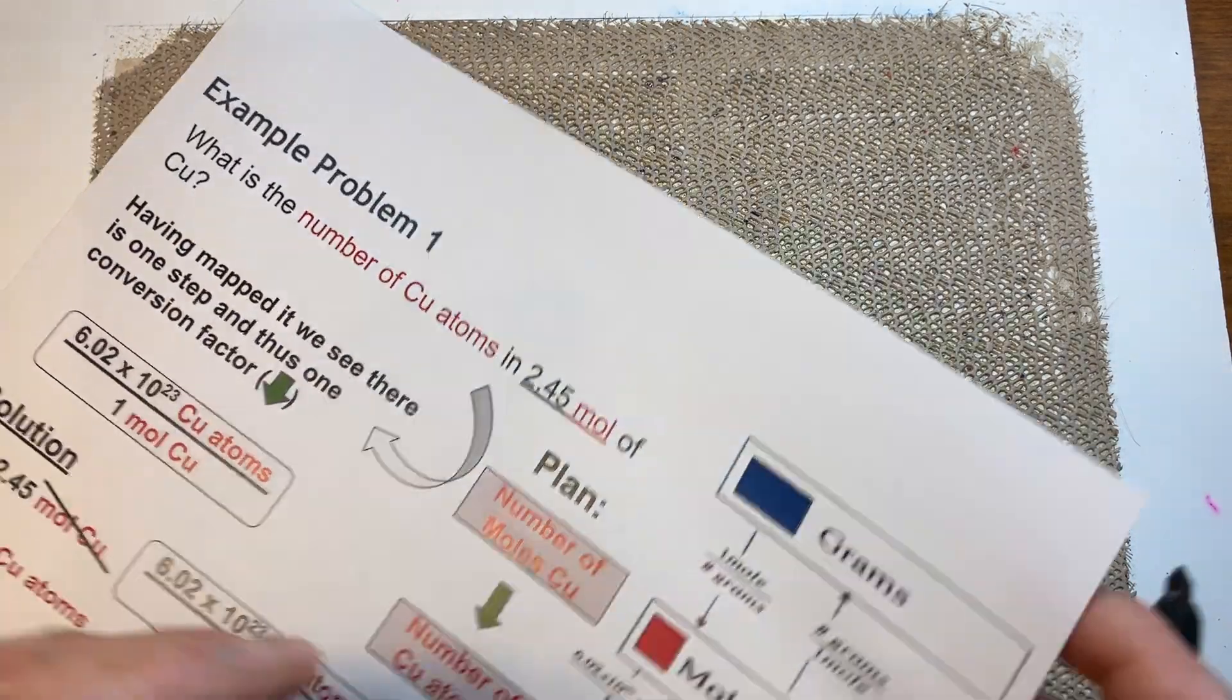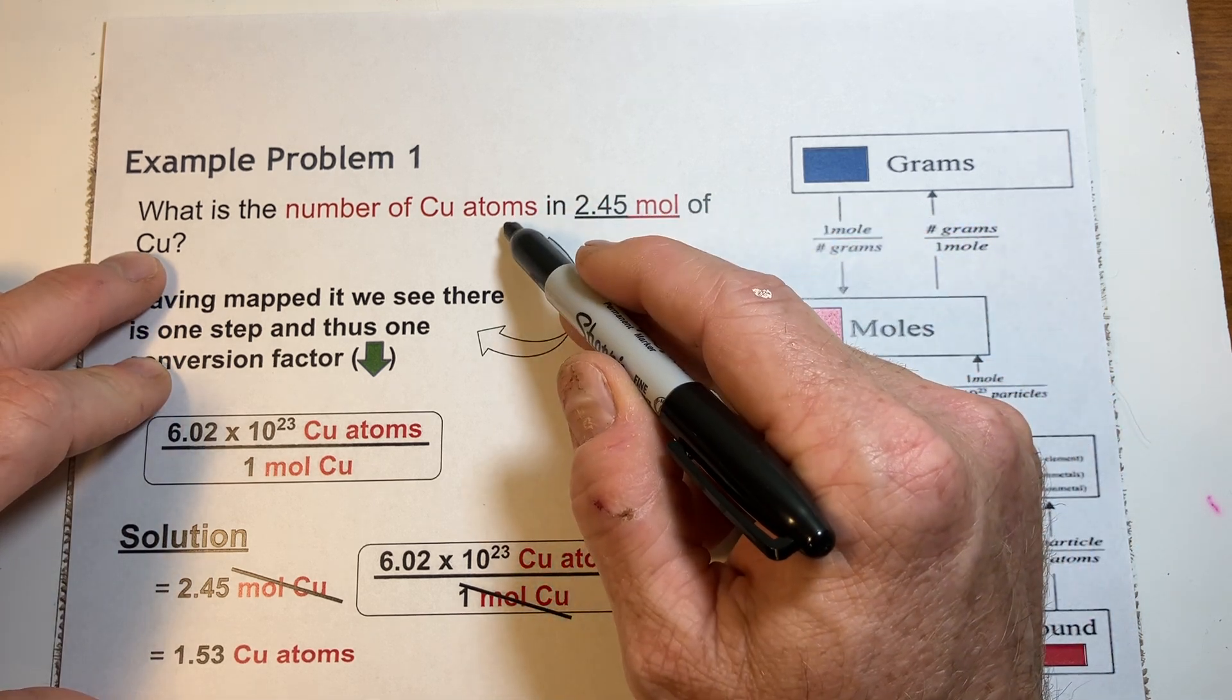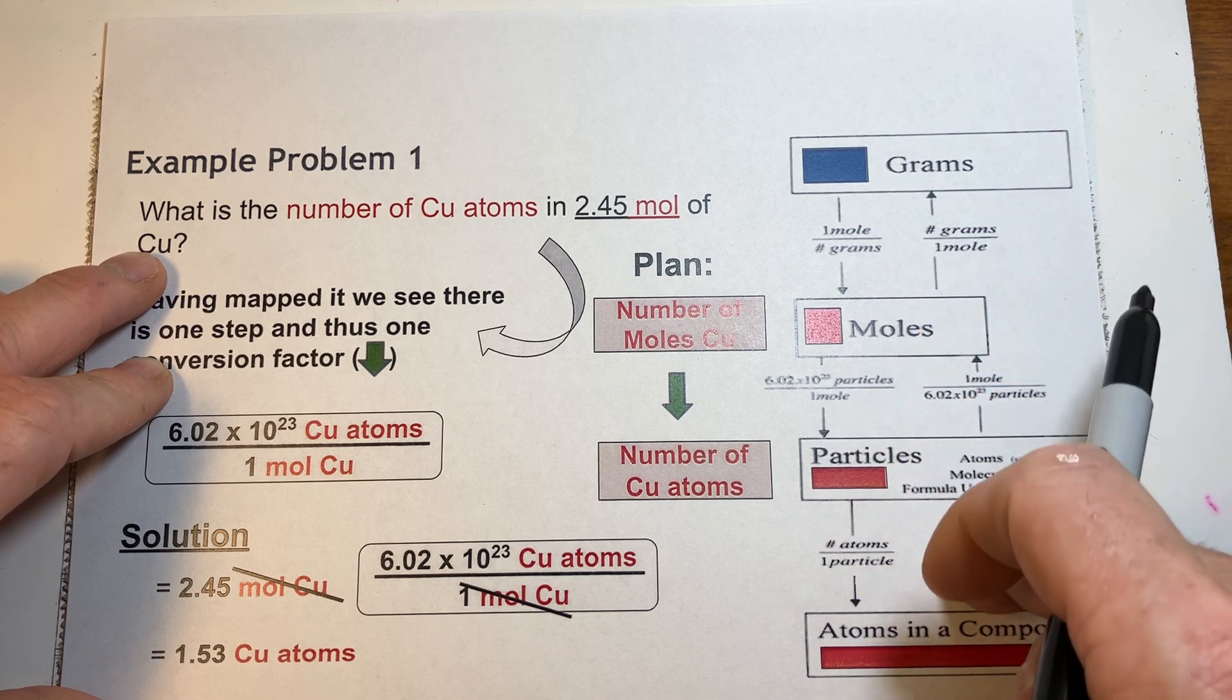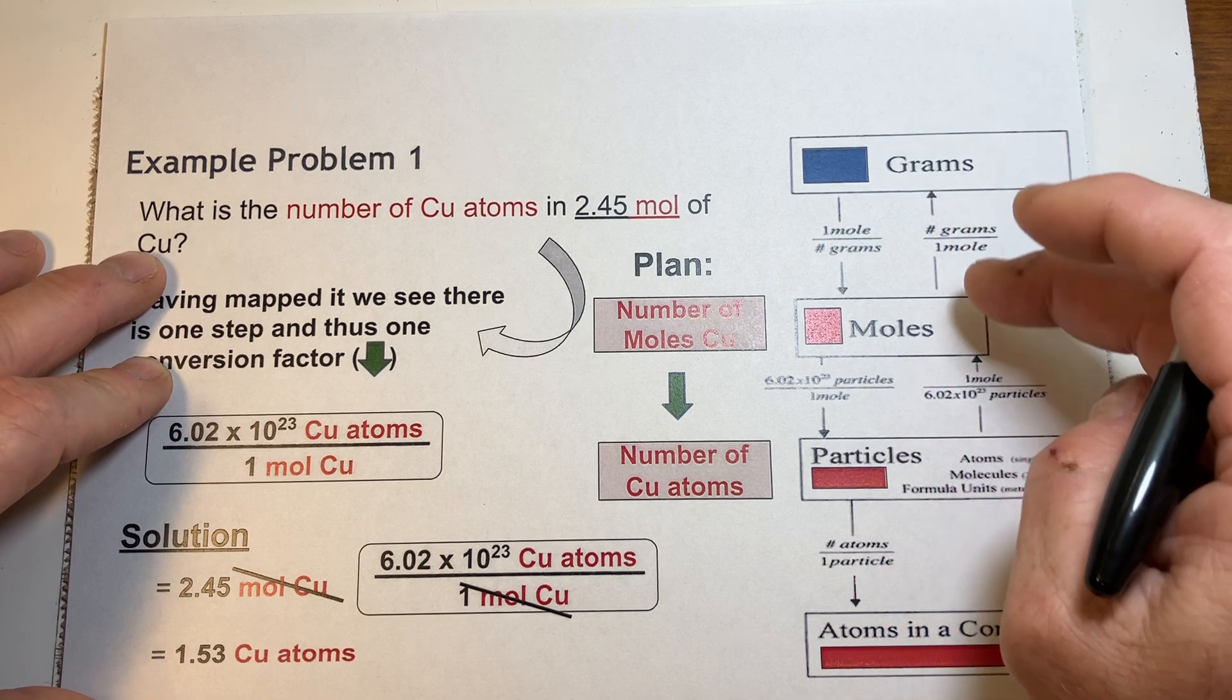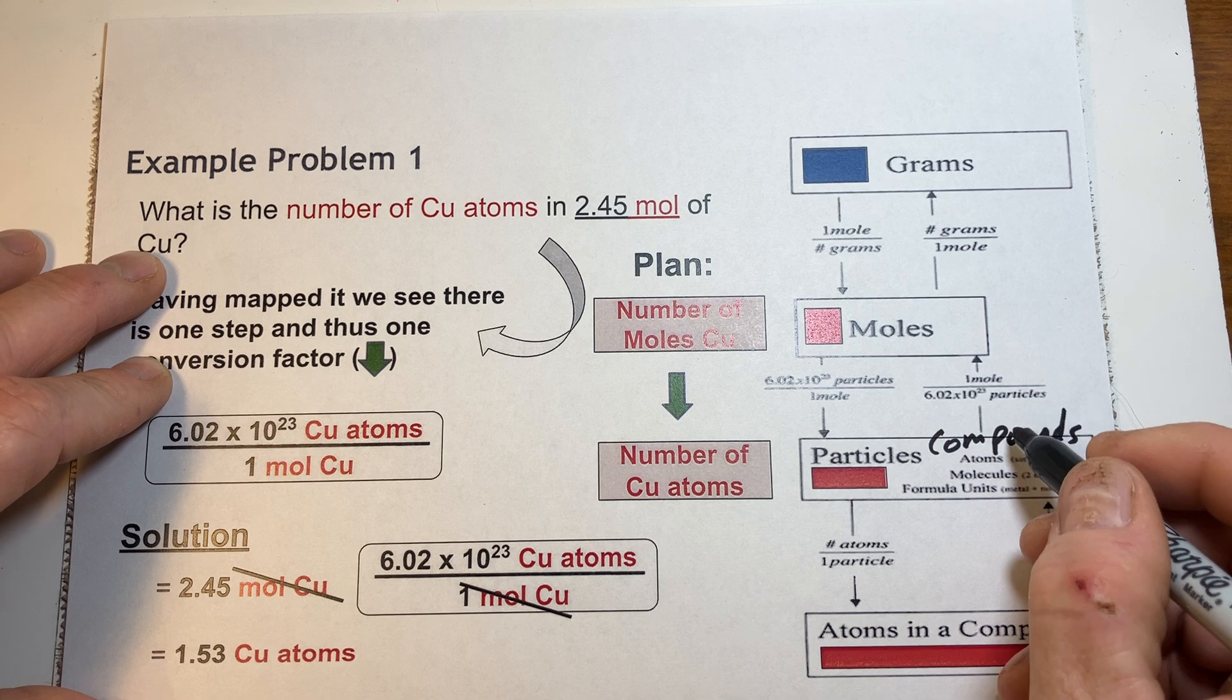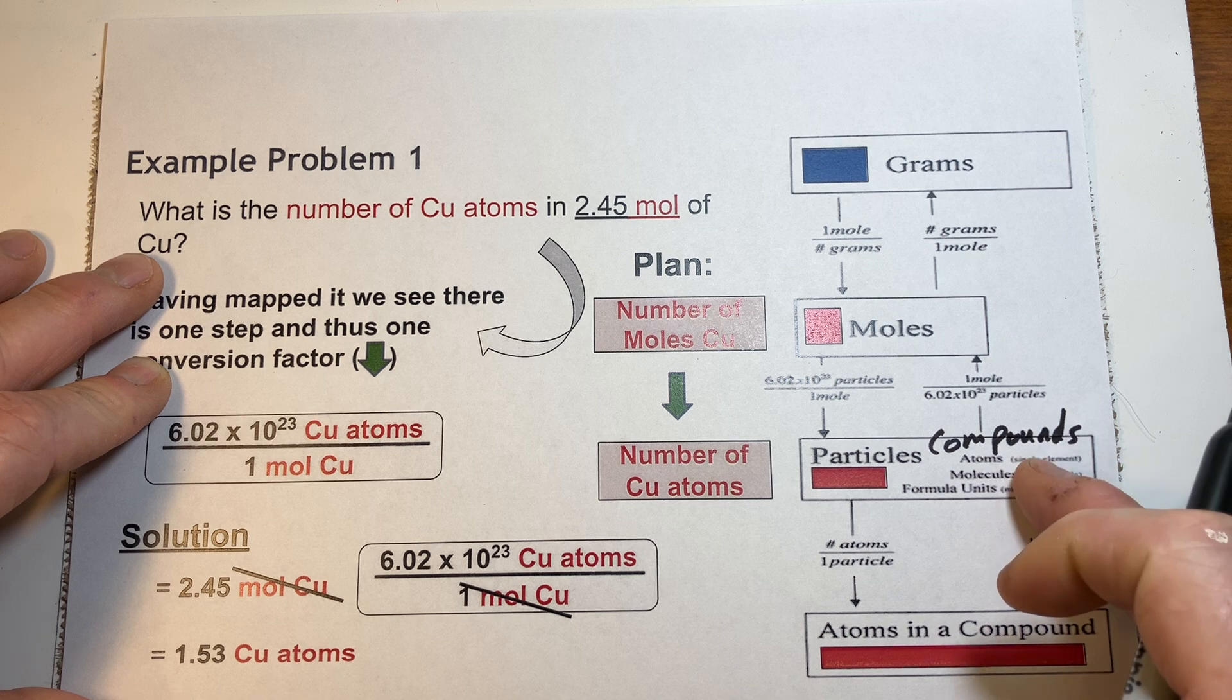Let's do just a quick work with this 2.45 moles of copper. It wants to know the number of copper atoms. One of the things we'll do in class is we'll set up a guide or a key or sort of a pathway that you always are having to consider. It's kind of a map, I guess. It's grams to moles, moles to particles, and this can be also tagged as maybe compounds.